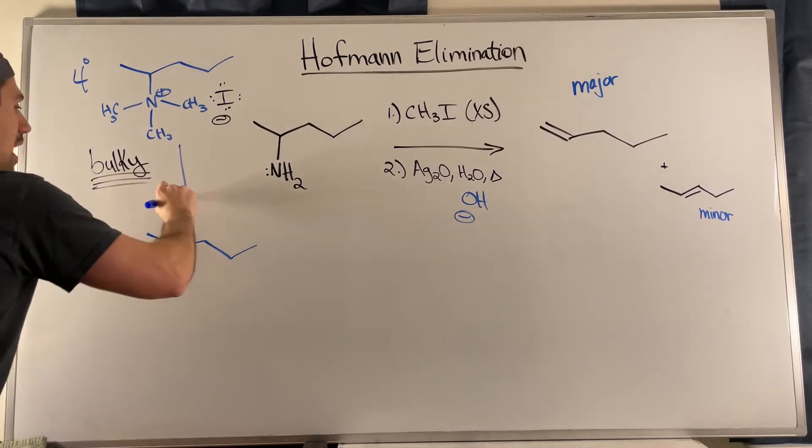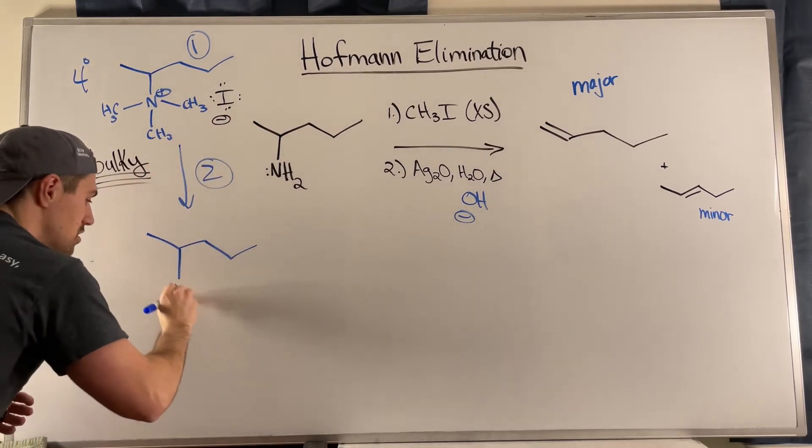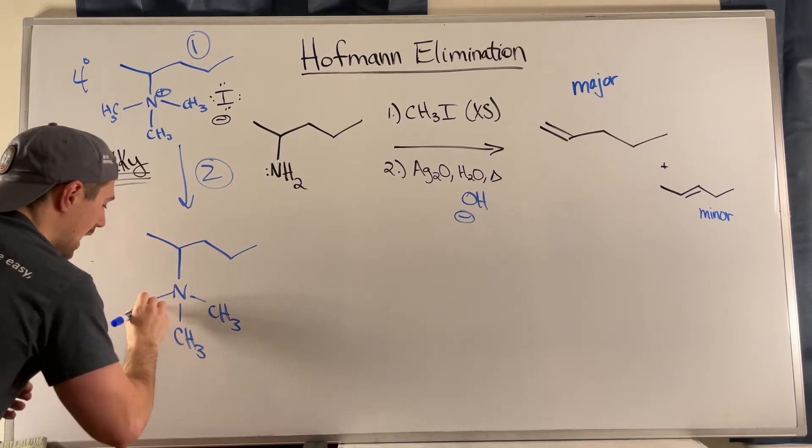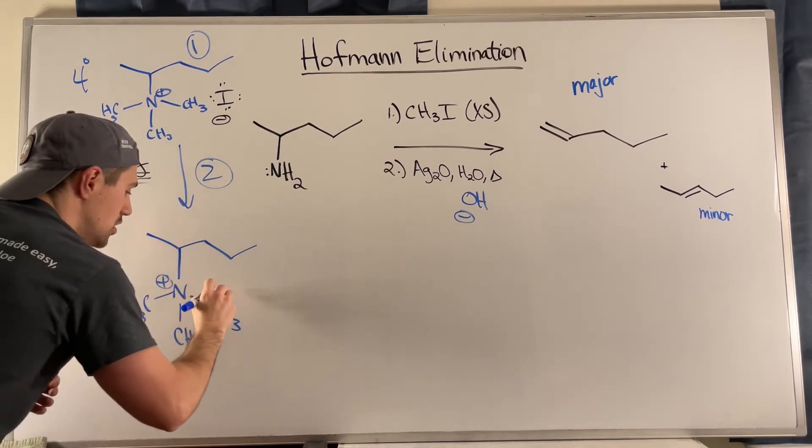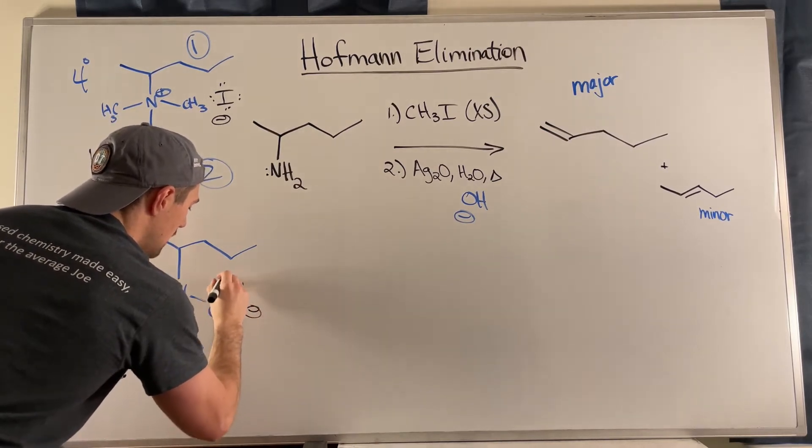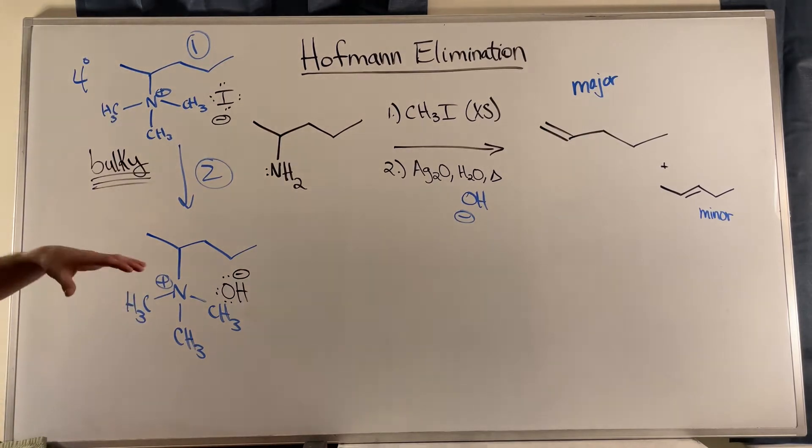Well, and again, you don't need to care about this mechanistically. What the silver oxide and the heat aims to do is it aims to create a situation, takes the water and it tries, it takes the water, it generates hydroxide, and you're going to swap out whatever your counter ion in the ammonium salt is with hydroxide. So you generate a different ammonium salt.